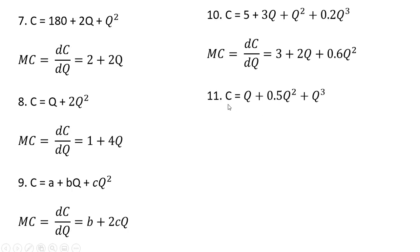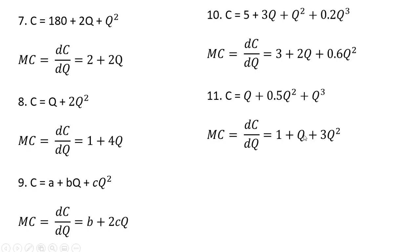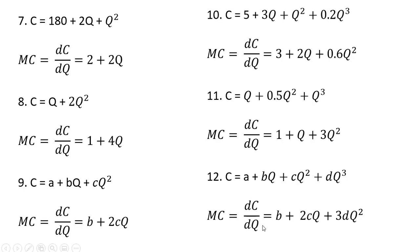Example 11. We have this cost equation. Let's get marginal cost. The derivative of q is 1. The derivative of 0.5q squared is just going to be q — the 2 comes down in front, so 2 times 0.5 is 1, and then we subtract 1 from the exponent, leaving just q. And then finally, this last term will be 3q squared. So in general, if you have a cubic cost equation that looks like this, marginal cost will equal the following.